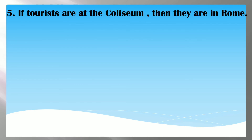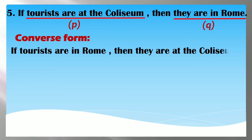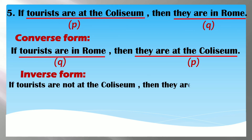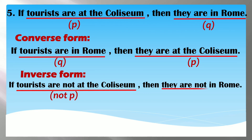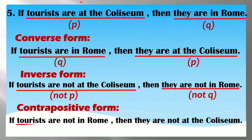And last number: if tourists are at the Coliseum, then they are in Rome. Ito yung ating hypothesis at ito yung ating conclusion. Pagbabaliktarin natin dahil converse — so: if tourists are in Rome, then they are at the Coliseum. And then inverse — maglagay lang tayo ng 'not' both the hypothesis and the conclusion: if tourists are not at the Coliseum, then they are not in Rome. And ang contrapositive form naman ay pagbabaliktarin lang natin yung statement sa ating inverse: if tourists are not in Rome, then they are not at the Coliseum.